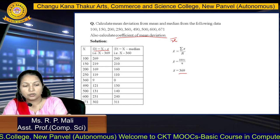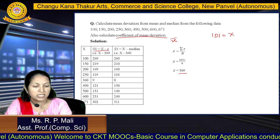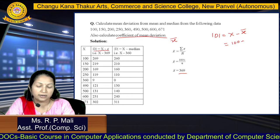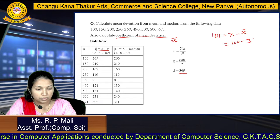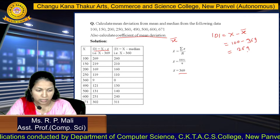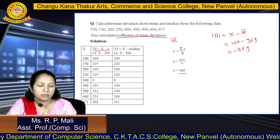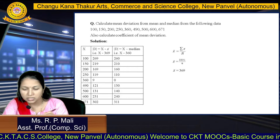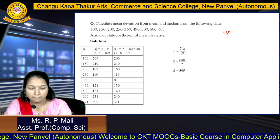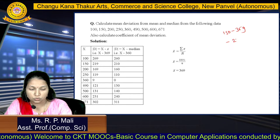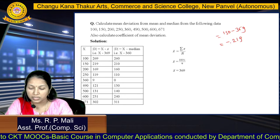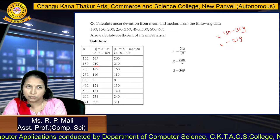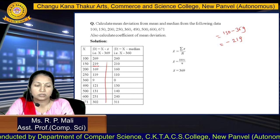The formula for deviation is |D| = x minus x̄. For the first value: 100 minus 369 = −269, but we ignore the sign, so it becomes 269. For the second value: 150 minus 369 = −219, again ignoring the sign gives 219. Same way, we subtract the mean from each x value. This column of values is what we call the deviation D. You can also subtract from the median or mode — it is your choice.